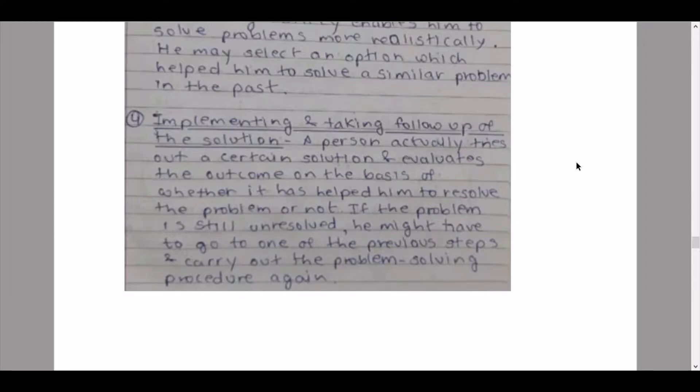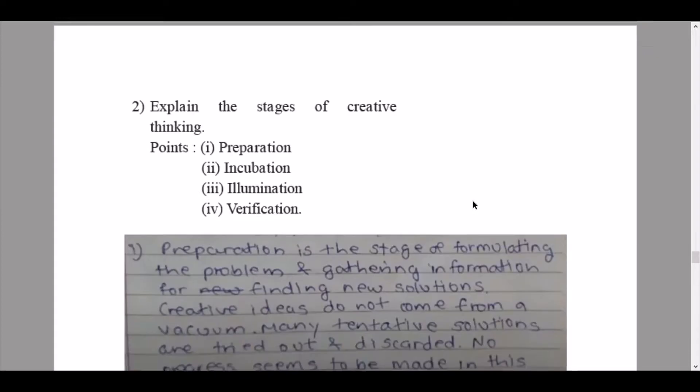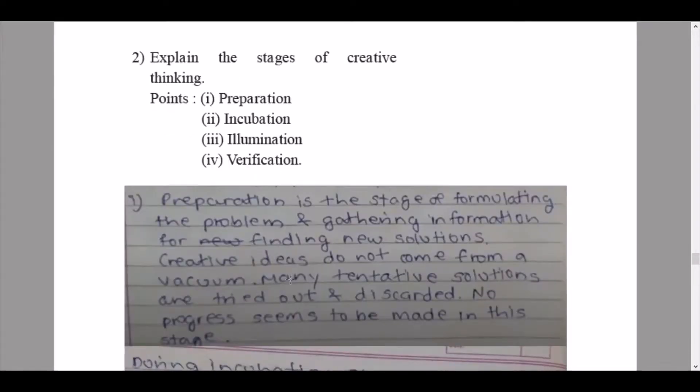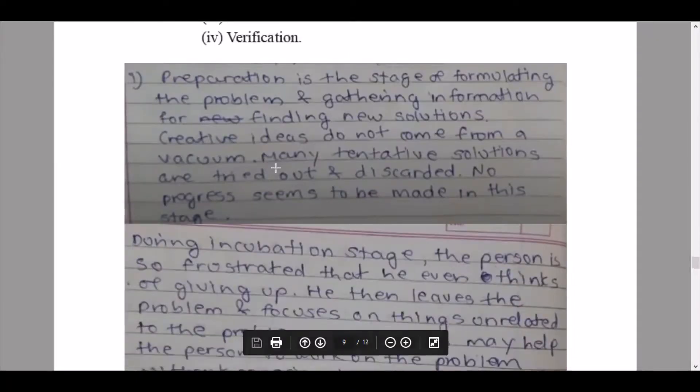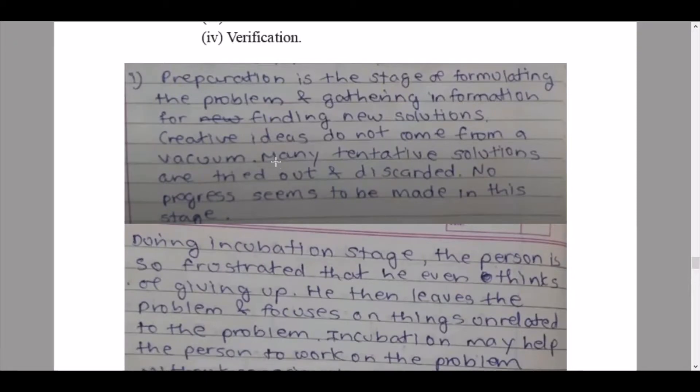So this was our part one. Then we continue to our second question: explain the stages of creative thinking with the points given: preparation, incubation, illumination and verification. We start here with the first pointer. Preparation is the stage of formulating the problem and gathering information, finding new solutions. Creative ideas do not come from a vacuum. Many tentative solutions are tried out and discarded. No progress seems to be made in this stage.